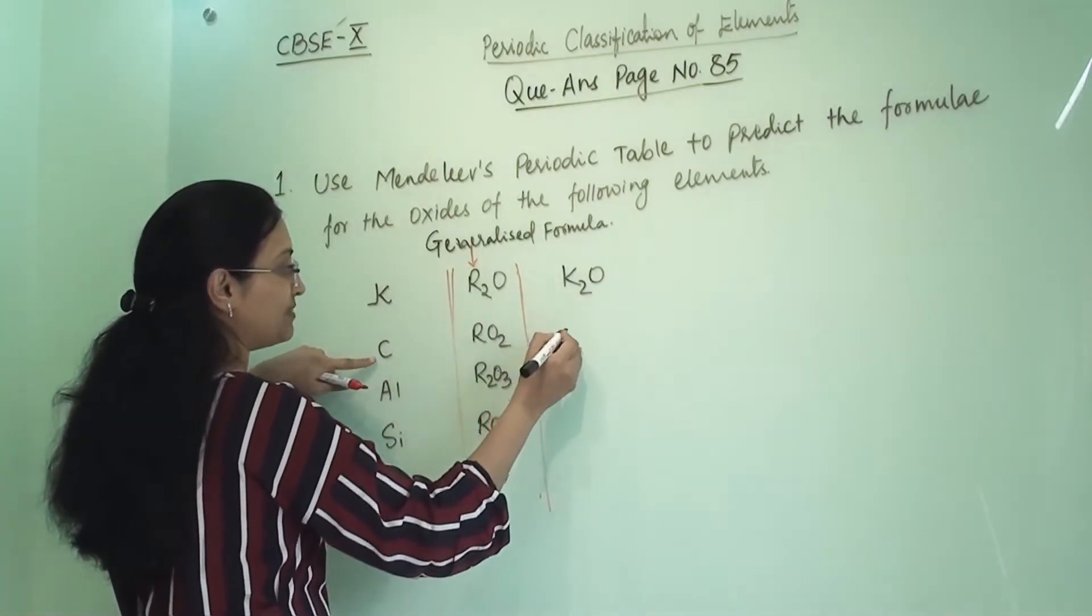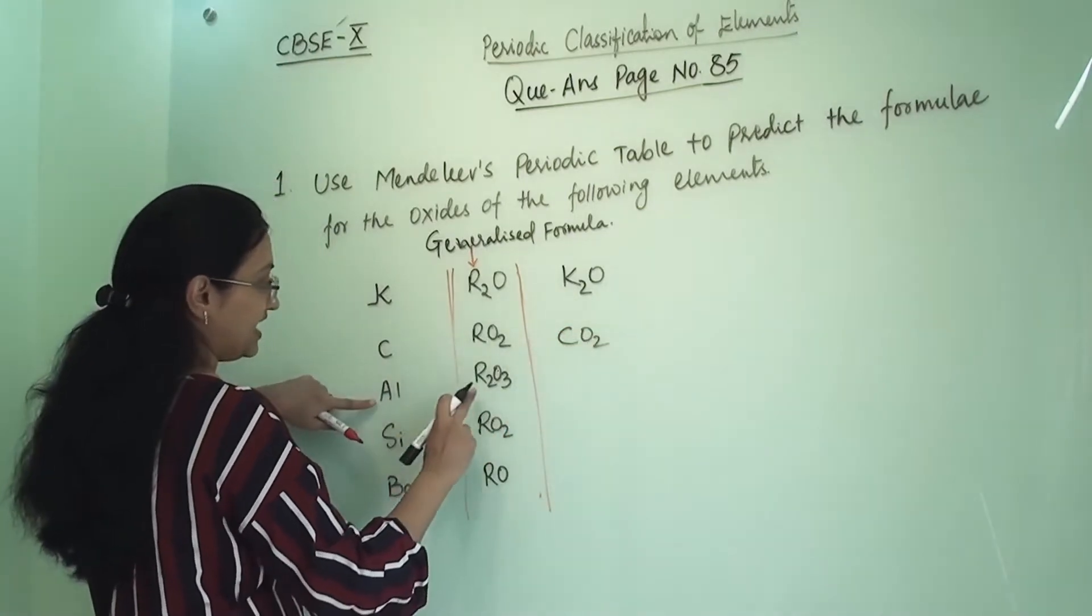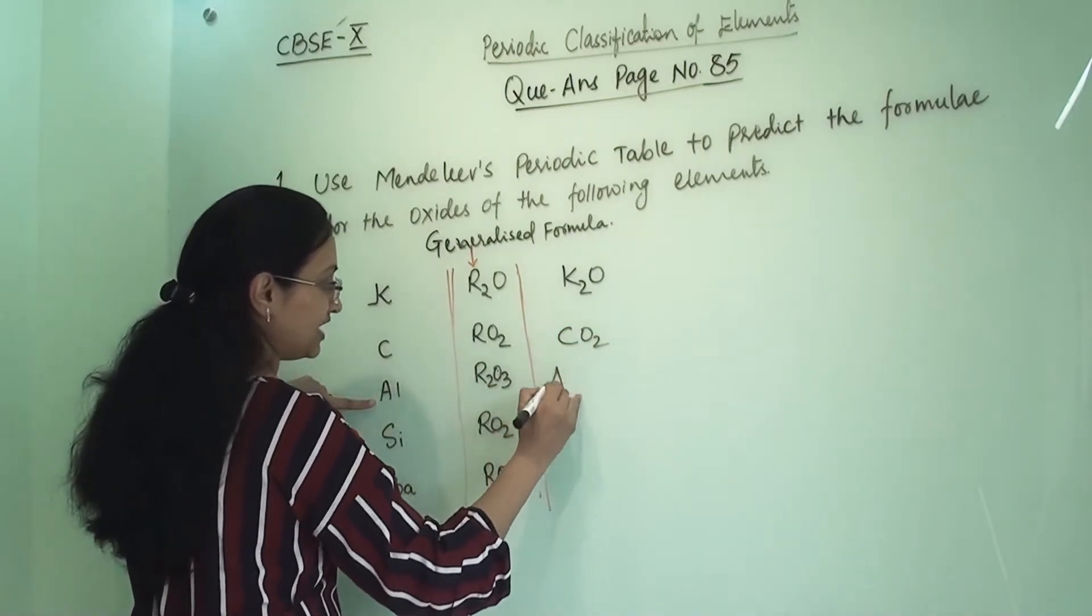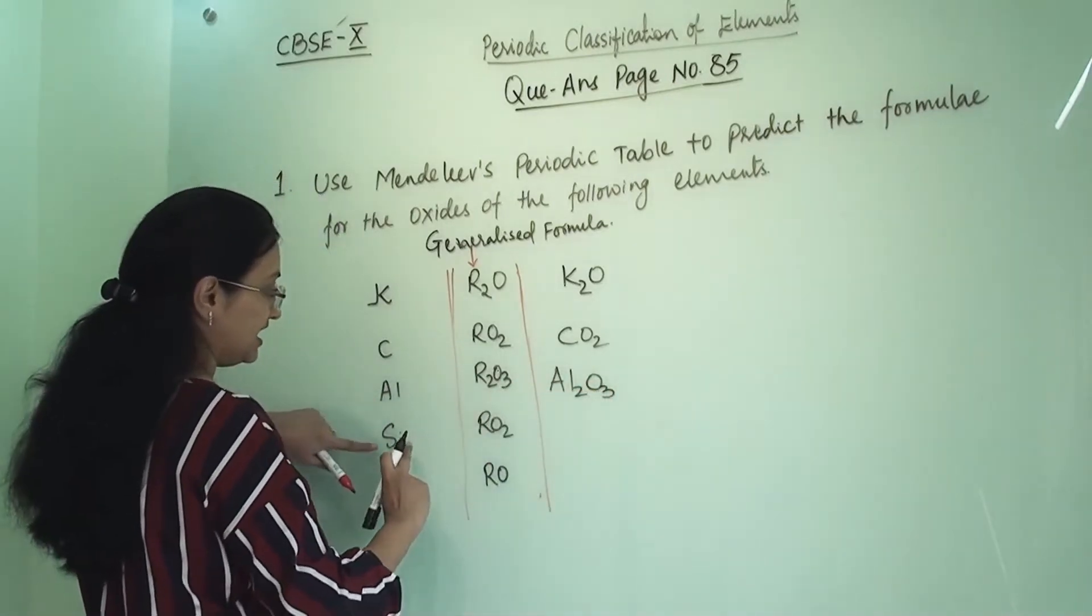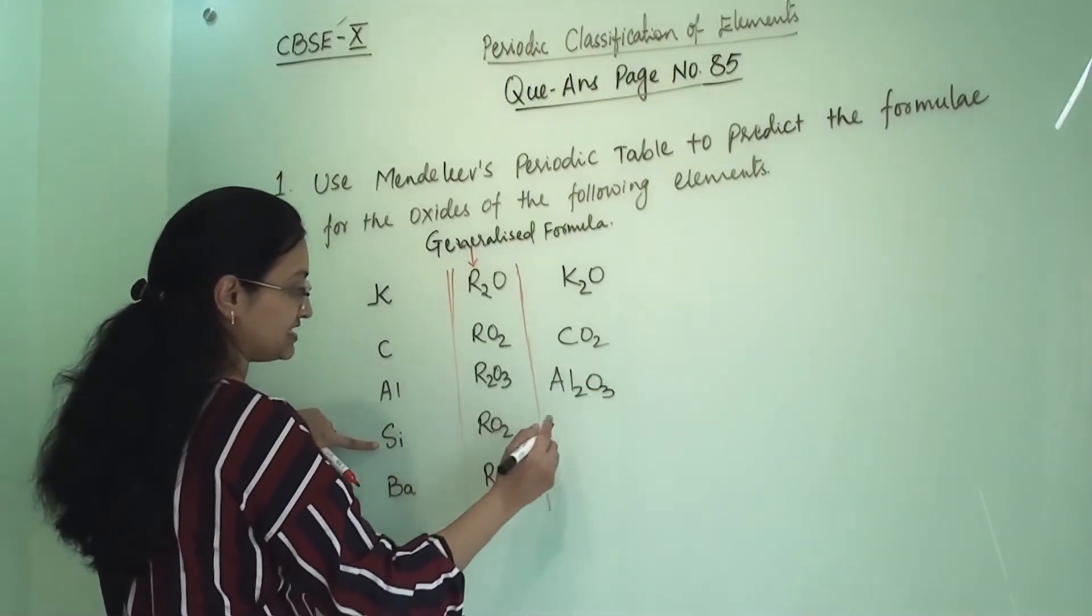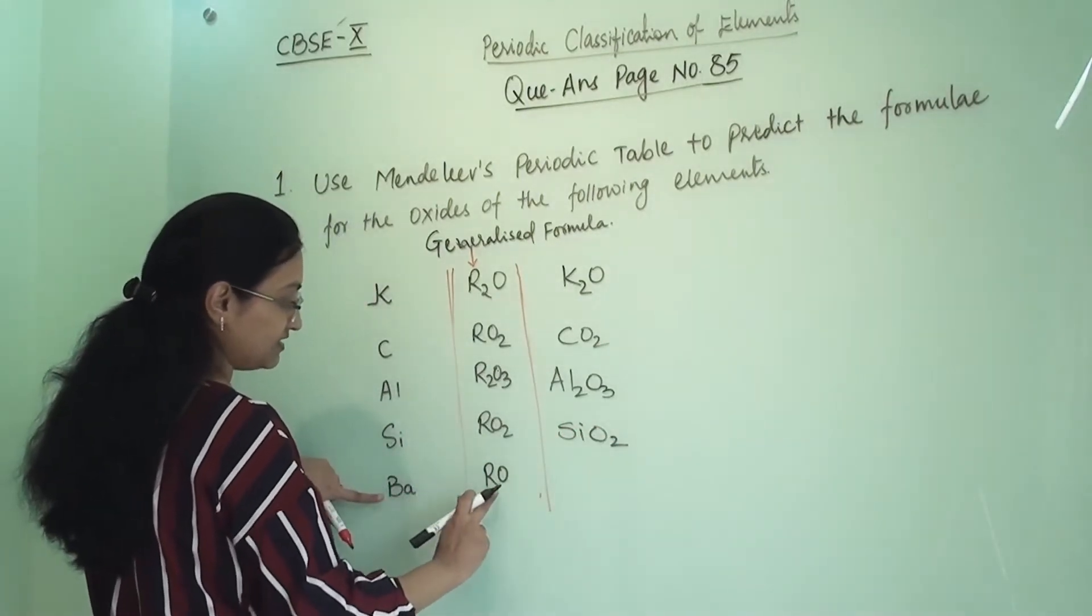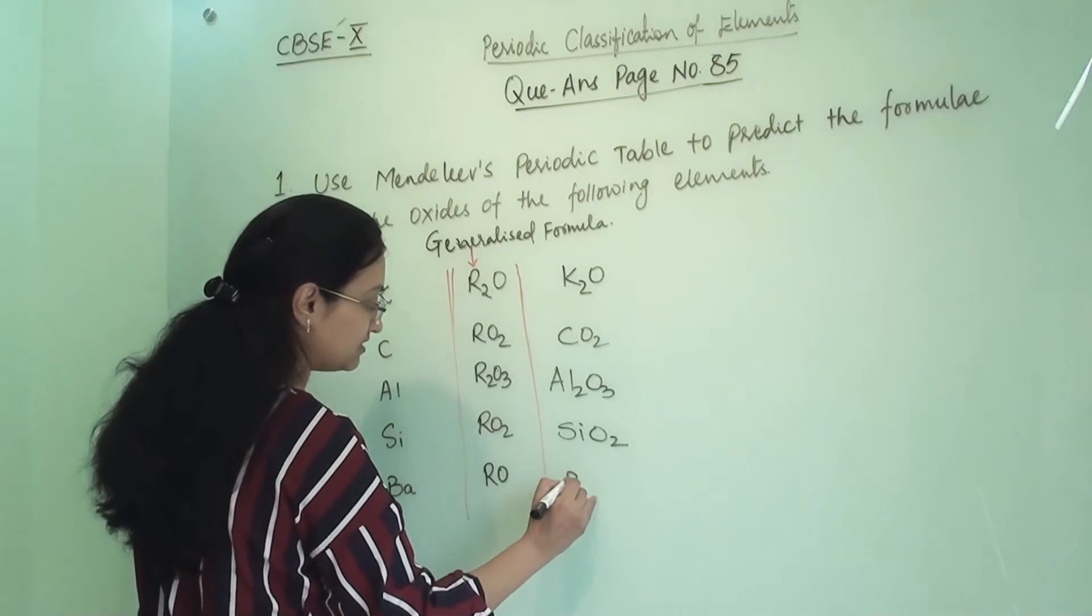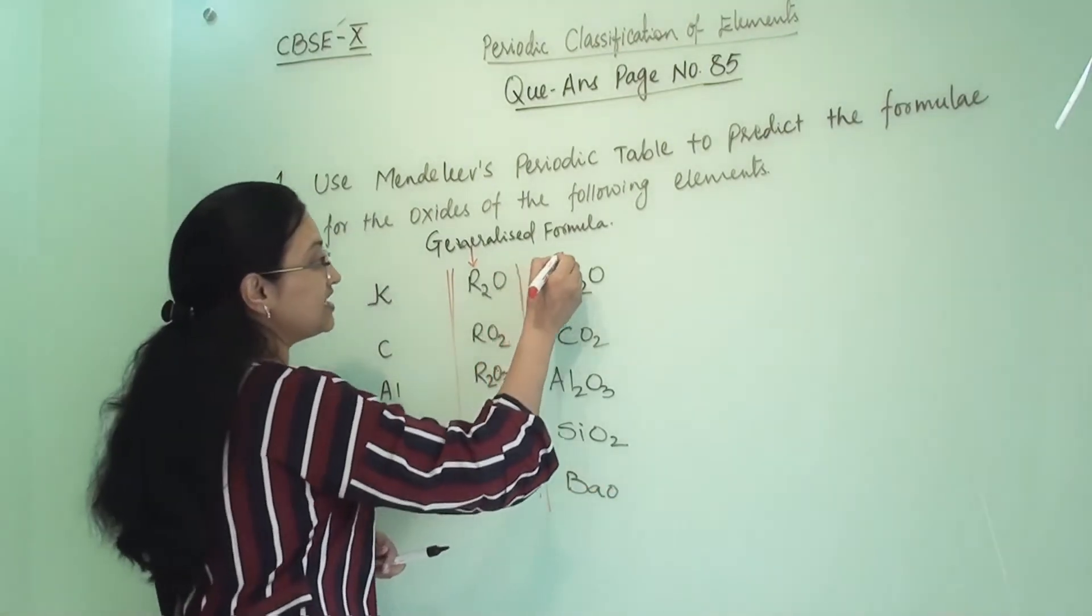Now R is our element, so it is C and O2 means CO2. R is our element, so Al2 and here O3. Now R is our element, so Si and O2. Then Ba, so R is Ba here, Ba and O. So these are the oxide formulas.